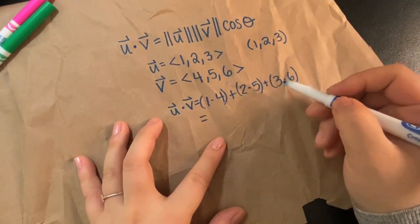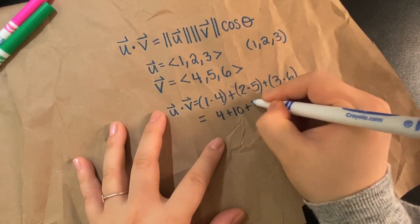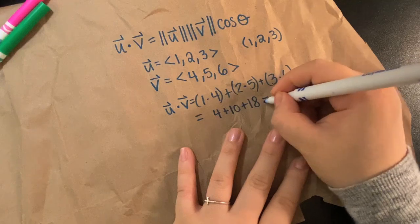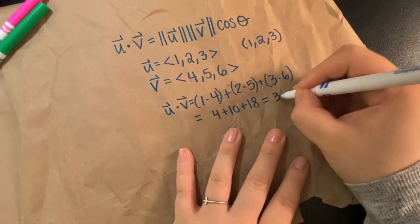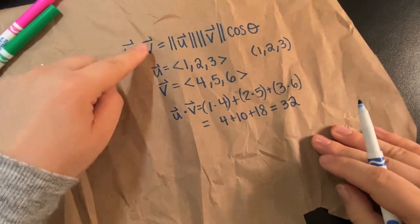So that's going to give me a number. In this case, 4 plus 10 plus 18. We're not going to calculate this all out for this question, but that would be 32. So U dot V is a number.